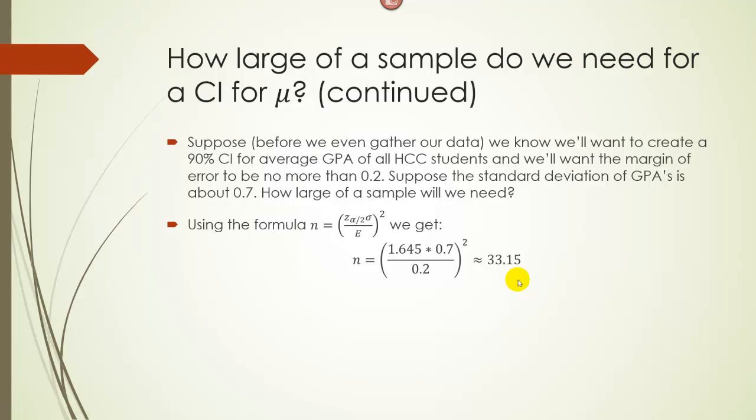Alright, so the minimum sample size we need is 33.15 people. Now I know that when you round, you're used to rounding whichever way is closer, but since we need a minimum of 33.15 people, we need to round this up because 33 is not at least 33.15.